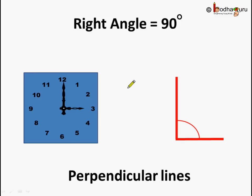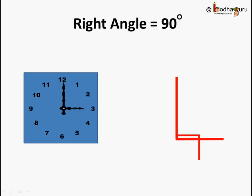So, when two straight lines are there and the angle between them is equal to 90 degrees, it is called a right angle and the two lines are said to be perpendicular lines. Remember, when the angle between the two lines is equal to 90 degrees, the lines are said to be perpendicular to each other. The two hands of the clock are at right angle or they are perpendicular to each other. We used a curve to represent the angle between two lines, but when it is 90 degrees, we represent it with a small square symbol instead of a curve.